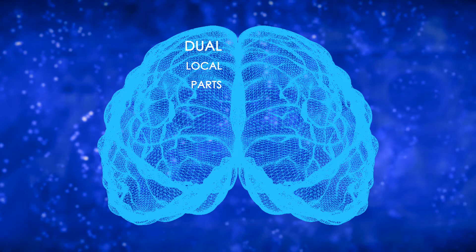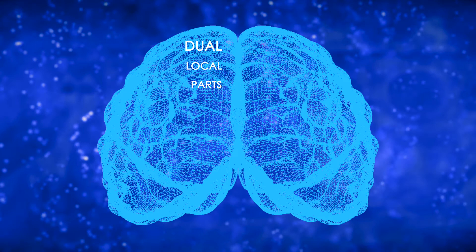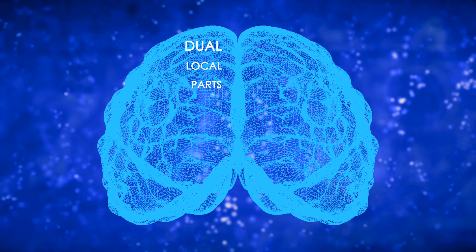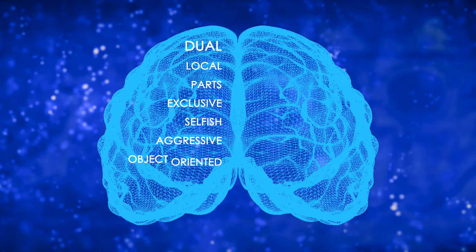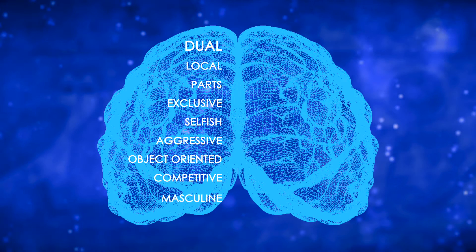The brain's dual system is focused on protecting us and getting us what we need. It does this by being, among other things, exclusive, selfish, aggressive, object-oriented, and competitive. Our dual system gives us our masculine characteristics.